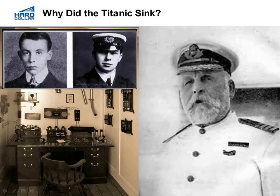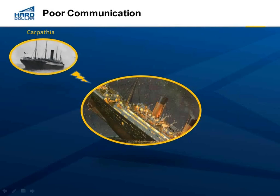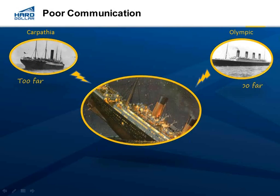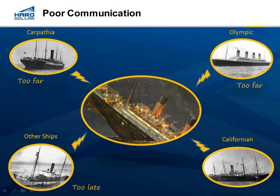In fact, he scolded the Californian for interrupting him. The rest is history. The Titanic hit the iceberg and started to sink. Smith ordered Phillips to begin sending distress signals. One of those reached the Carpathia at approximately 12:20 a.m., but it was too far away. Other ships in the area were contacted, but it was too late. The Californian, also in the vicinity, had its wireless turned off for the night. Due to this poor communication, only about half of the people were saved, and there were 1,500 fatalities.